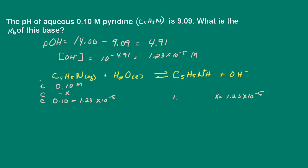The concentration of the cation here is 1.23 times 10 to the negative 5. So we're all set here to determine Kb.